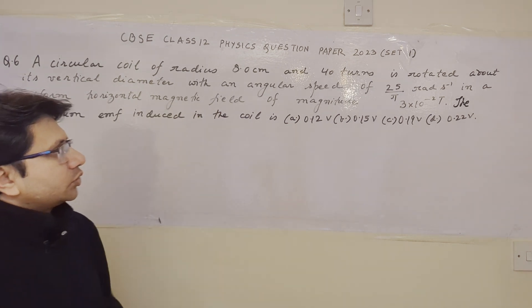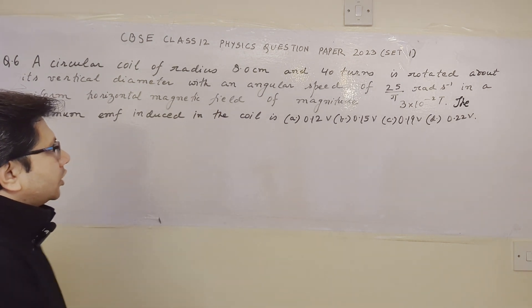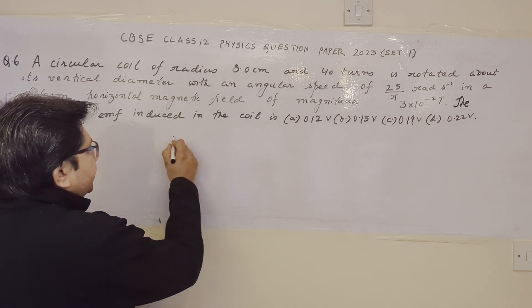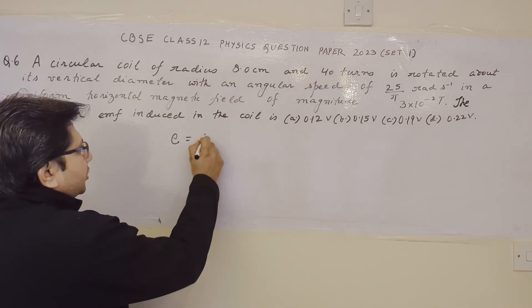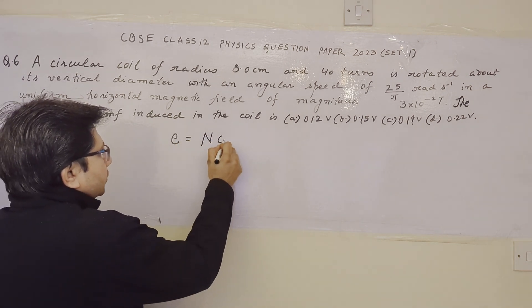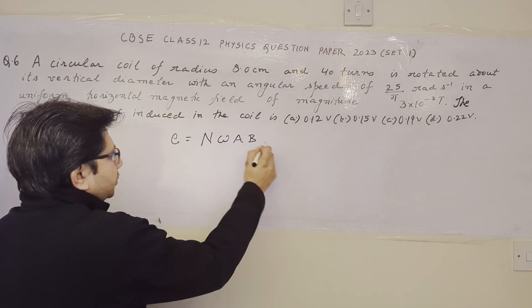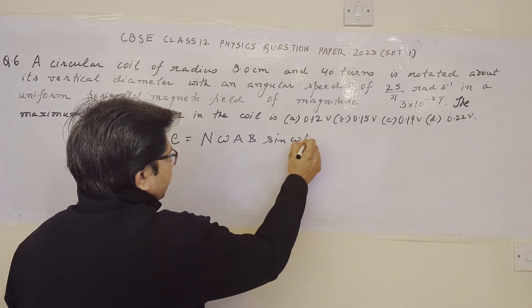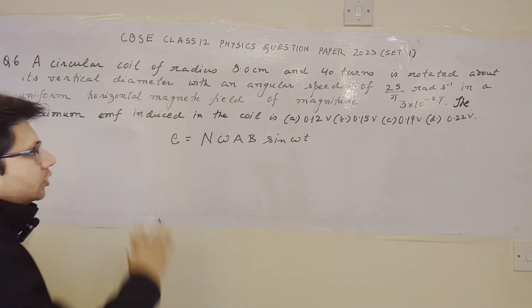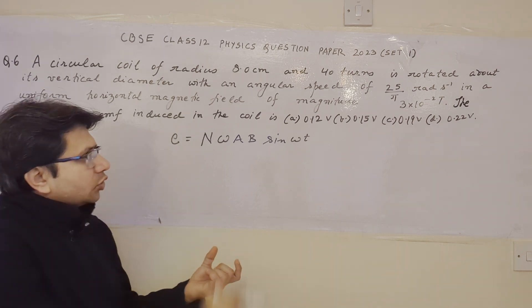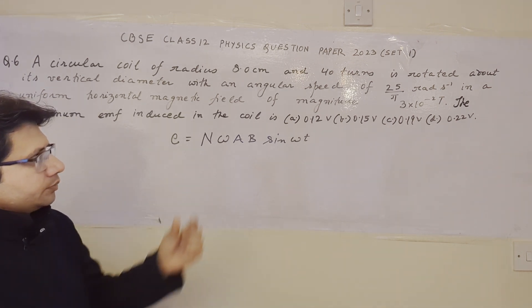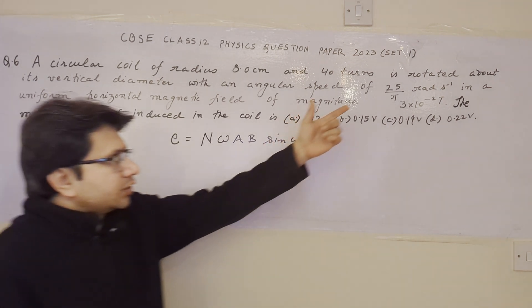So the problem is based on the topic, the induced EMF. The induced EMF in a coil is given by this formula N omega A B sine omega T. This is the formula of the generation of the EMF. The coil is rotated about the vertical diameter at a certain angular speed.